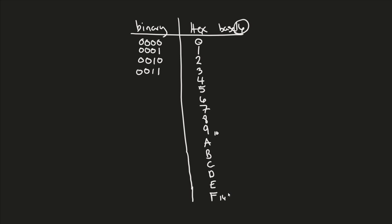Now that we've used both lower slots, we move up. Four is 0100. Continuing on: five is 0101, six is 0110, seven is 0111. Eight is 1000, and nine is 1001. You can see the pattern emerging as we work through each value systematically.